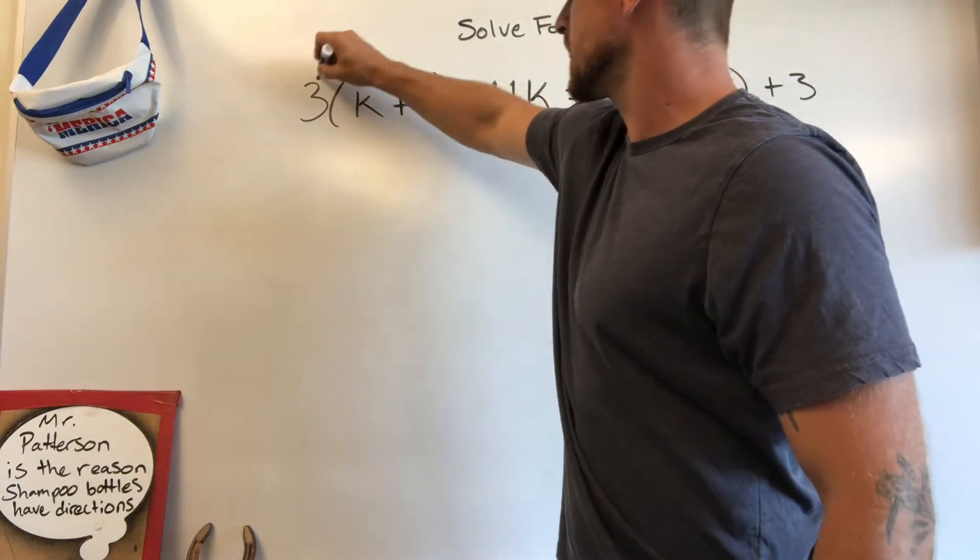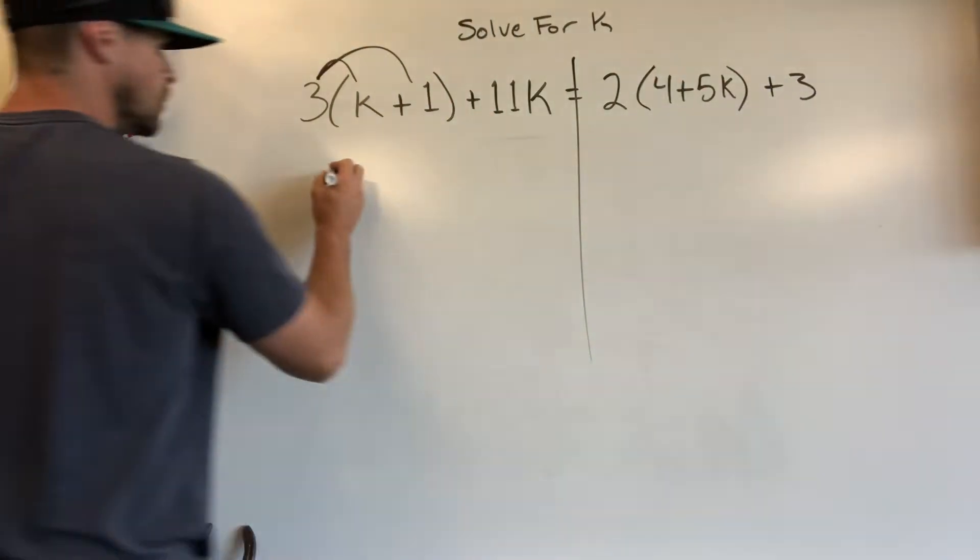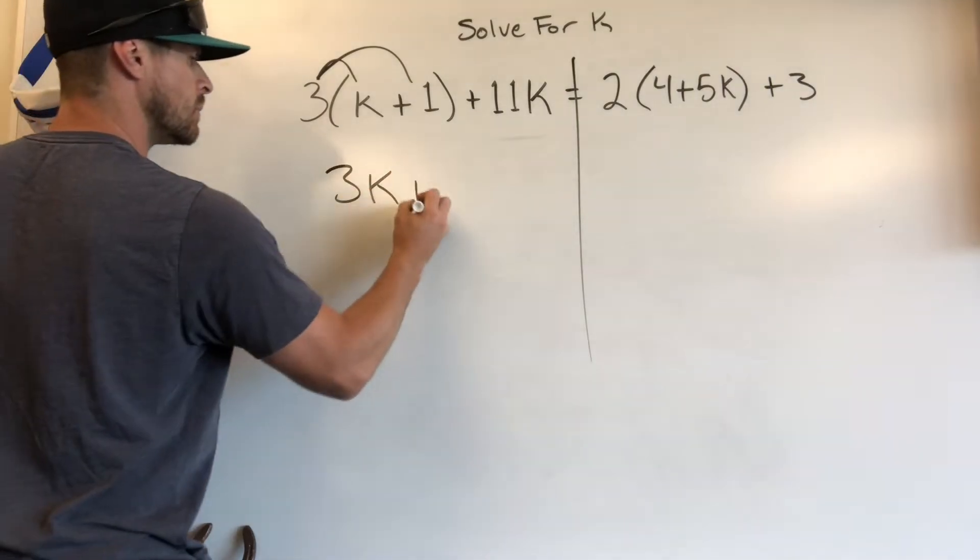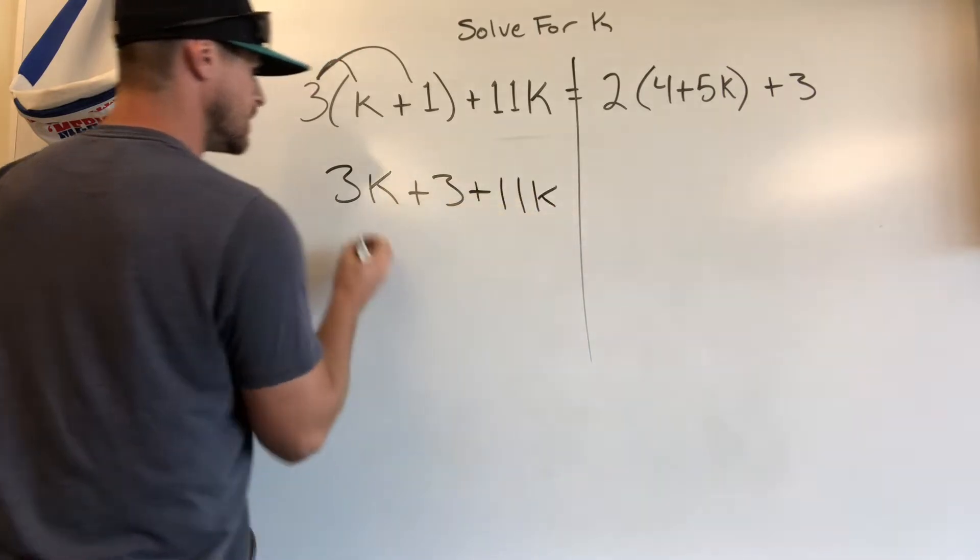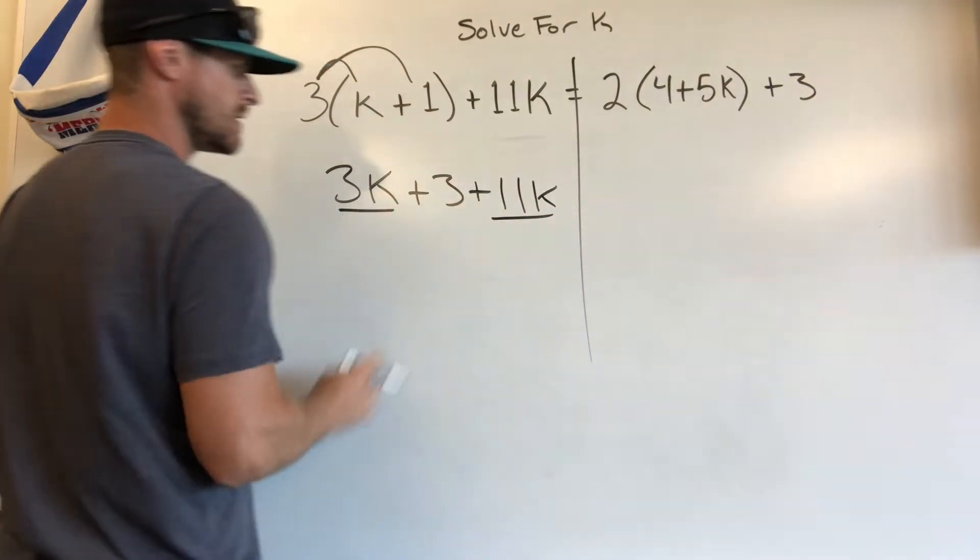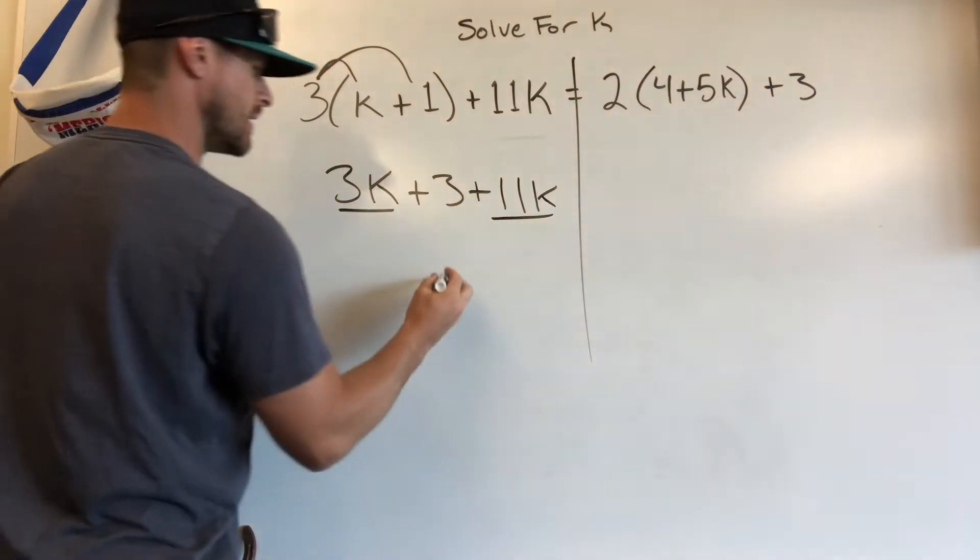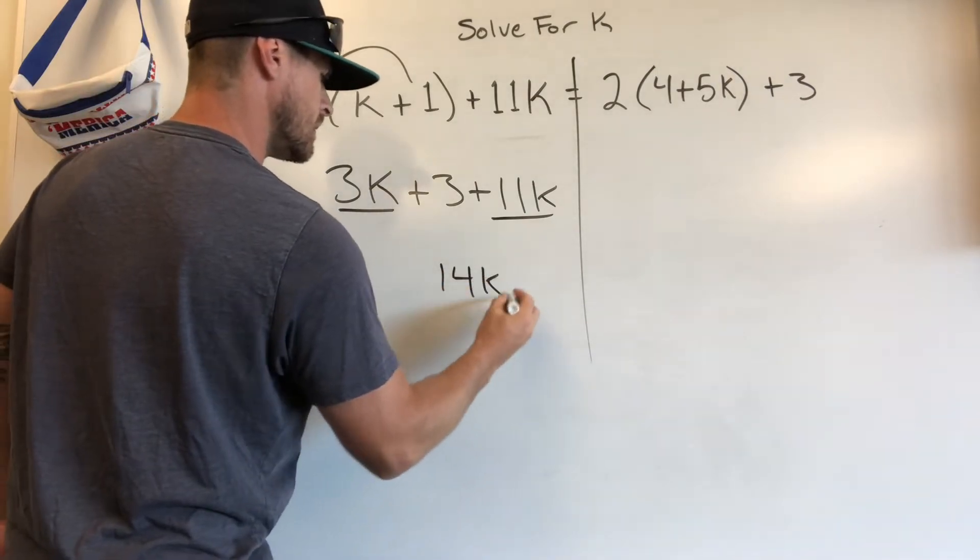First and foremost, 3 times k, 3 times 1, giving you 3k plus 3. Add the 11k. Now, these are like terms, 3k and 11k, so we're going to add those two together right now to get 14k plus 3.